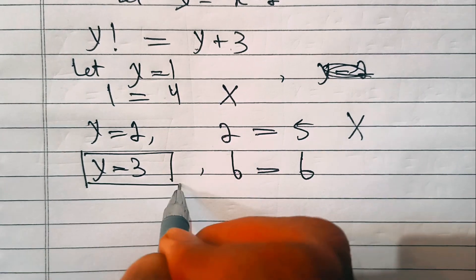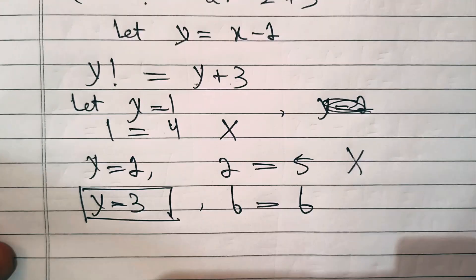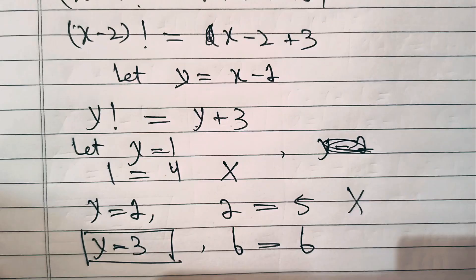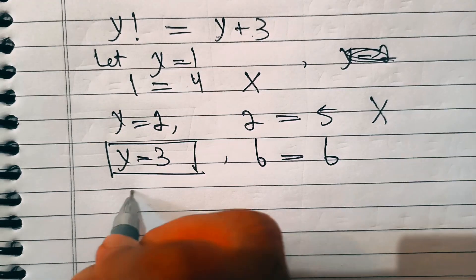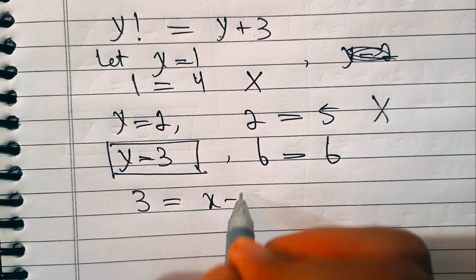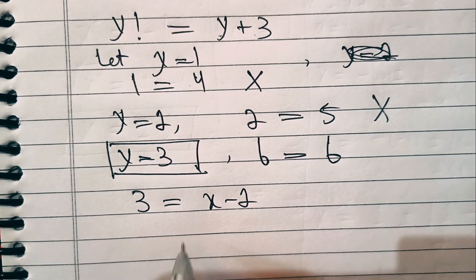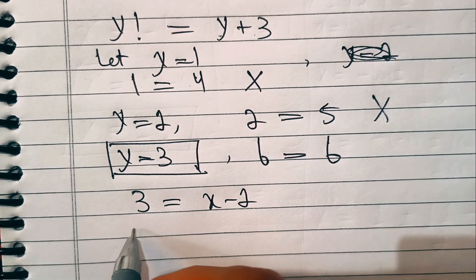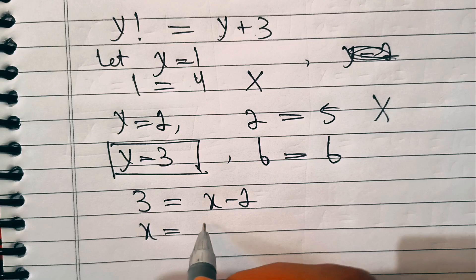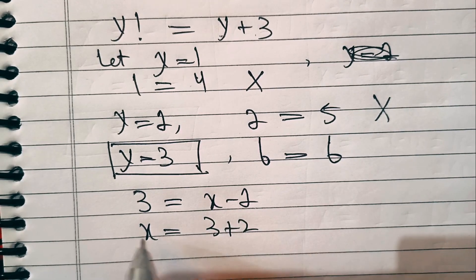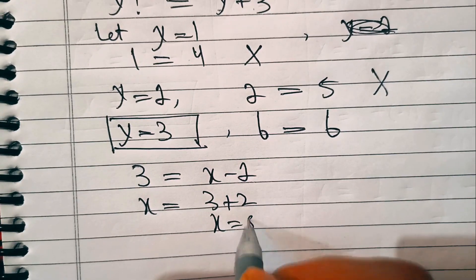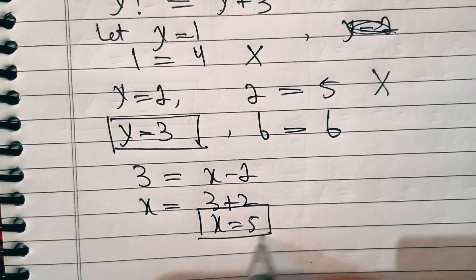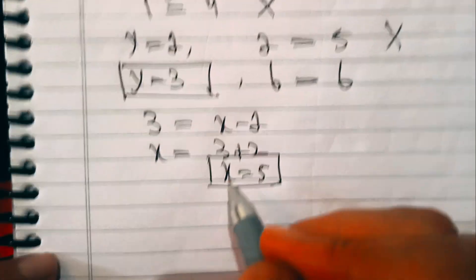Now we substitute back the value of y. Since y equals x minus two, and y equals three, we have three equals x minus two, which means x equals three plus two, so x equals five. This is the value of x.